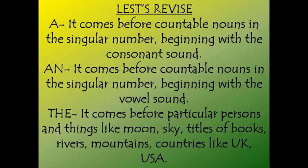Let us now have a quick revision. A comes before countable nouns in the singular number beginning with a consonant sound. The indefinite article an comes before countable nouns in the singular number beginning with a vowel sound. The comes before particular persons or things, and also with things like the moon, sky, titles of books, rivers, mountains, countries like UK and USA. Always remember: indefinite articles are a and an, whereas the definite article is the. Dear children, I hope you have understood this lesson. Thank you.